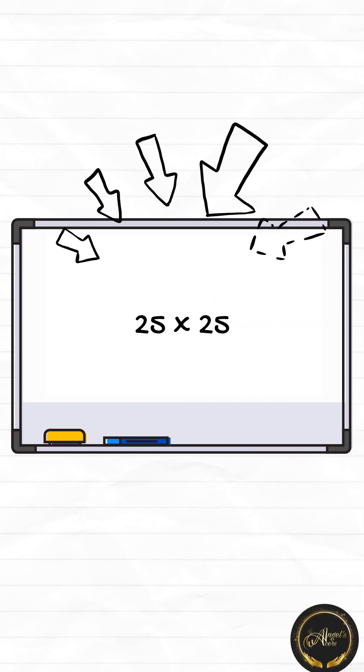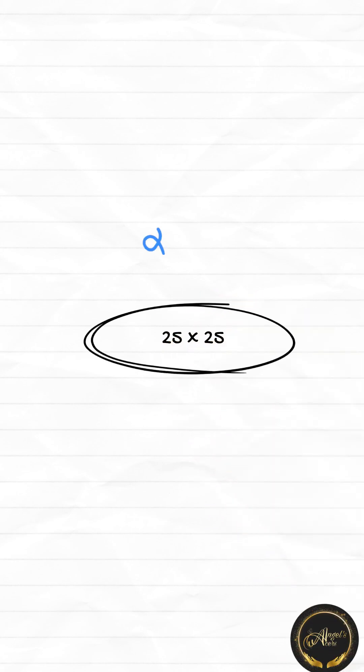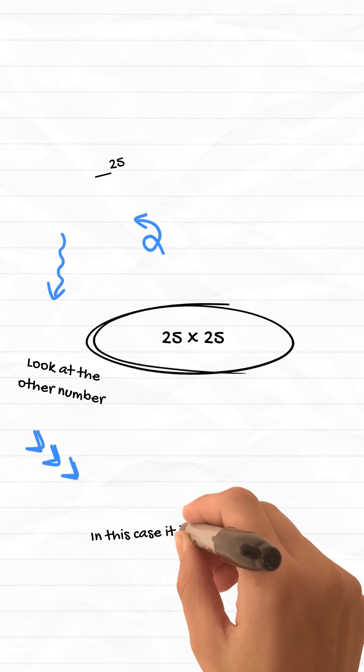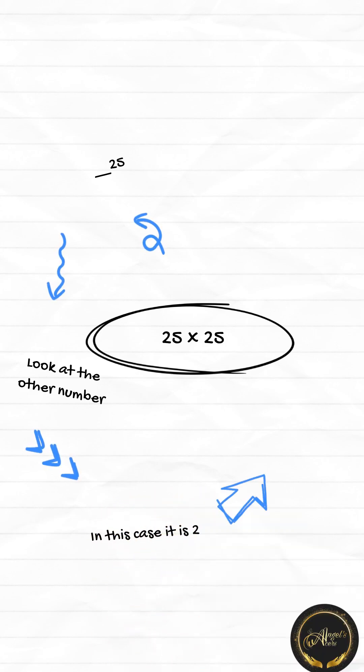In this case we follow this: we write 25, then we look at the 2, we multiply 2 with the next number which is 3. We do 2 times 3, just 6. We then put 6 before the 25. Our answer is 625.